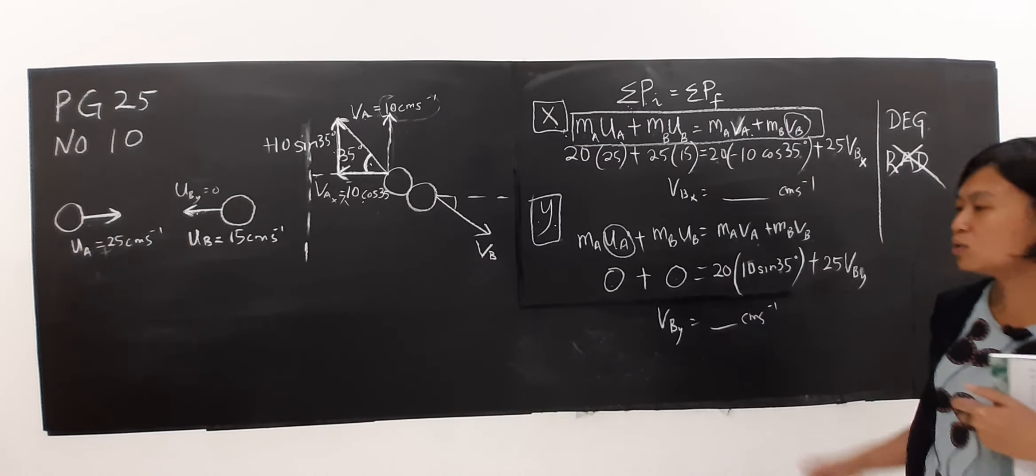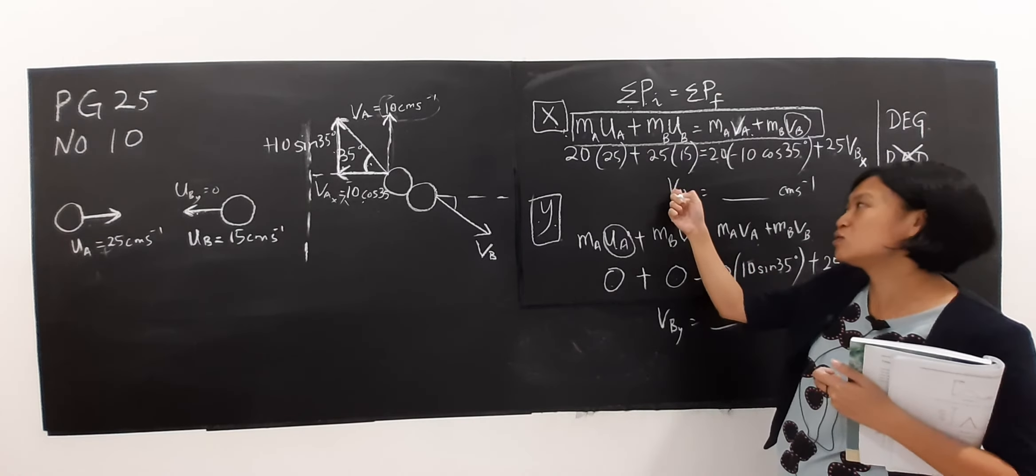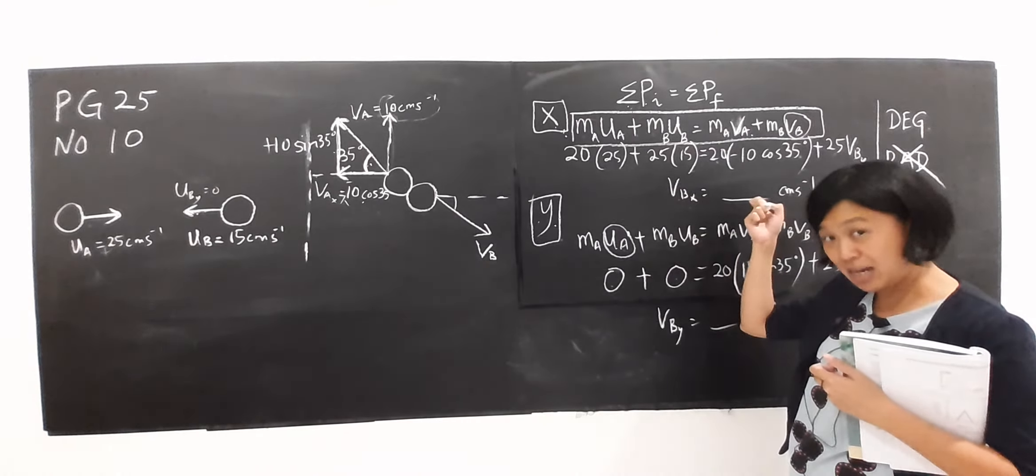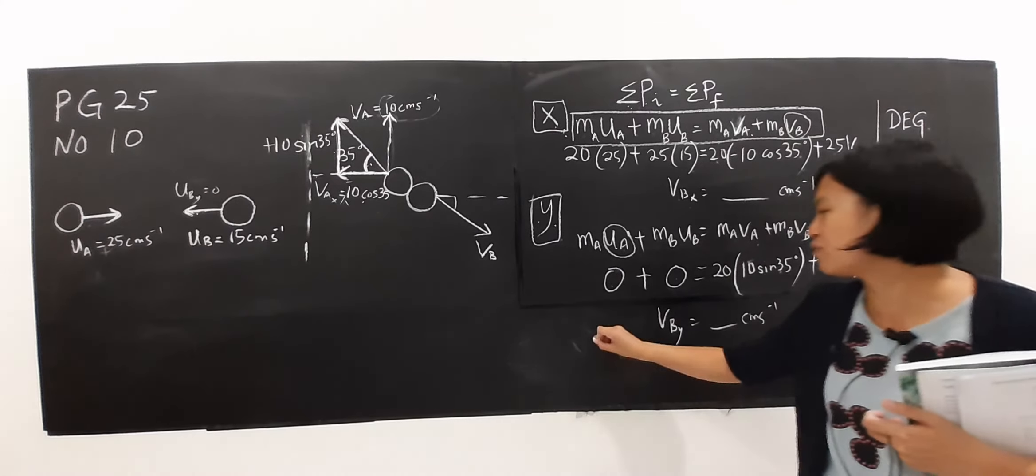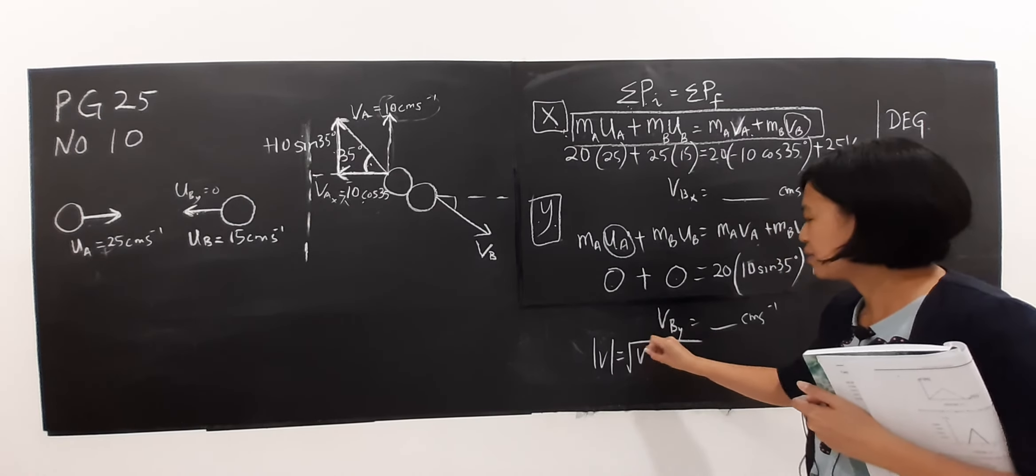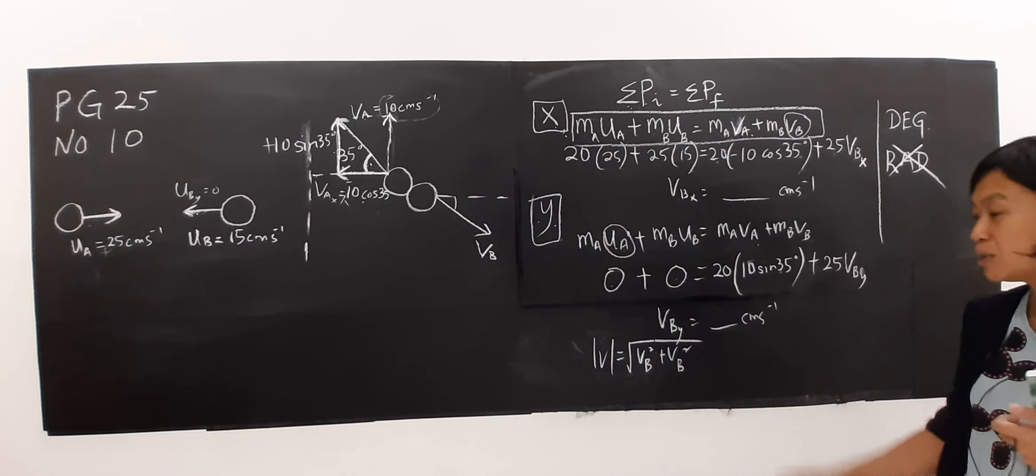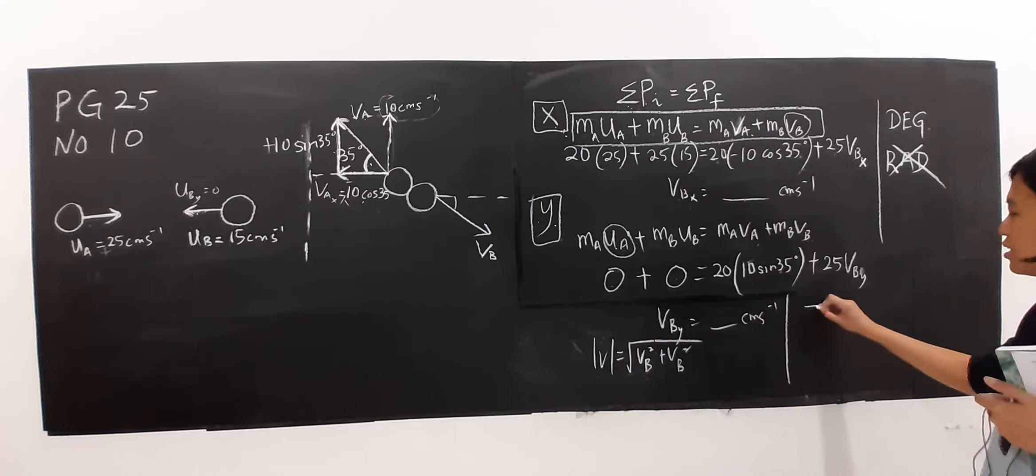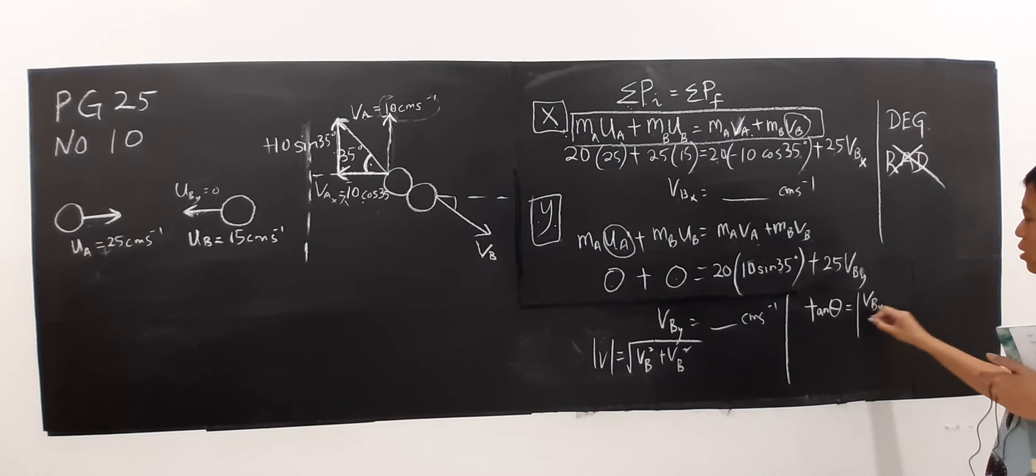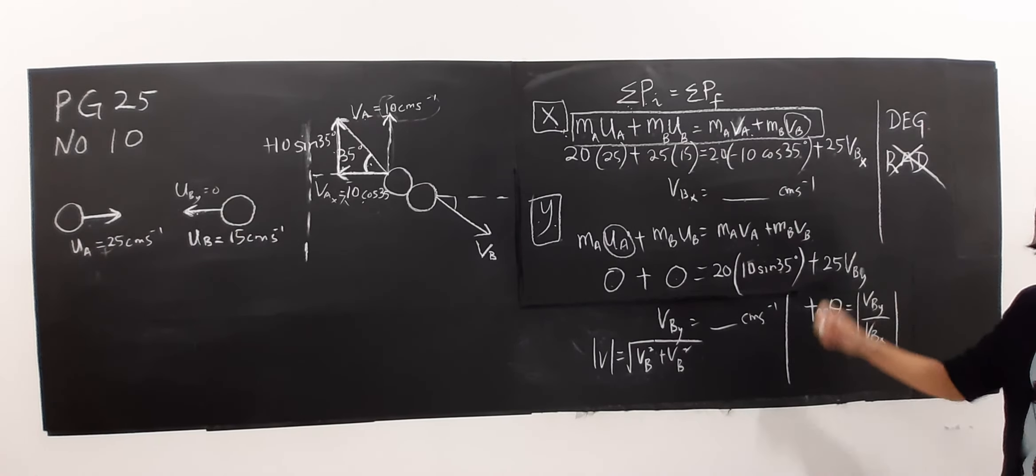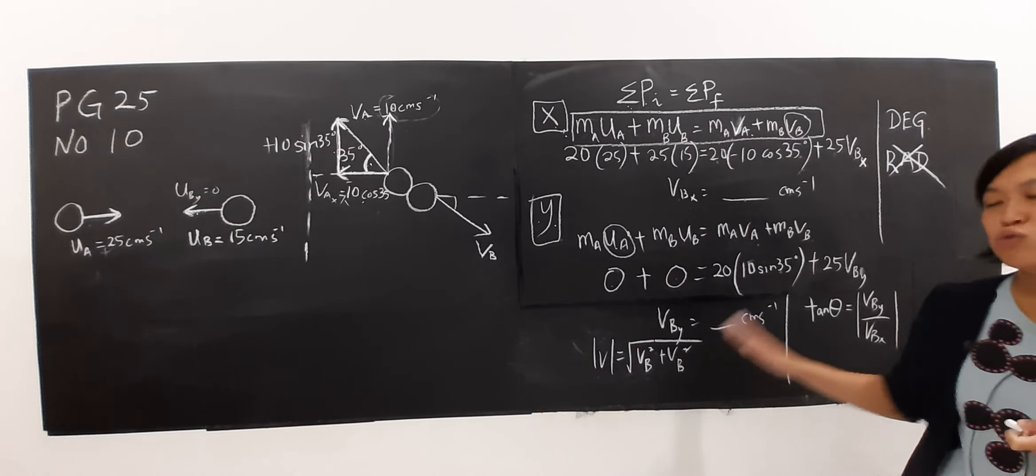What do I do next? This is velocity B on x-axis, this is velocity B on y-axis. So I'm going to find V. Remember, I'm using Pythagorean theorem. How to find direction? I'm going to find direction. Remember I can use this. This is what we learned in chapter 1, so try to recall this part.